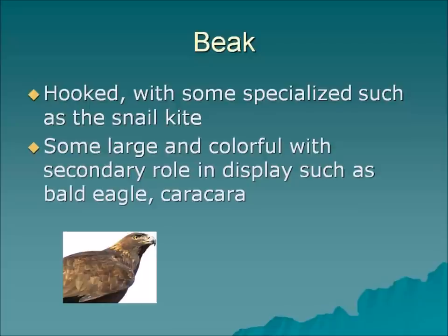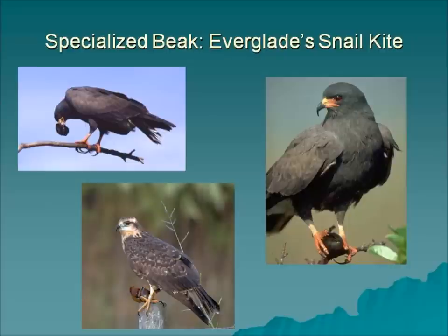The most notable feature besides talons is the beak. Raptors have a hooked beak, and some are more specialized — such as the Everglades kite, which has a large beak that may also play a role in breeding or territorial displays. They're not the only birds with hooked beaks — the parrot family also has them — but unlike parrots, which crack hard-shelled seeds and nuts, the hooked beak of birds of prey is specialized for tearing or extracting meat.